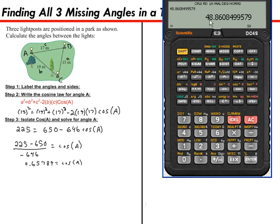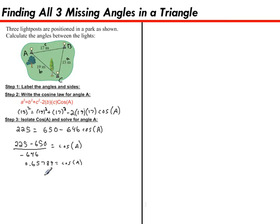And there is my angle for A. Let's say 49 degrees. A is equal to 49 degrees. One down two more to go.